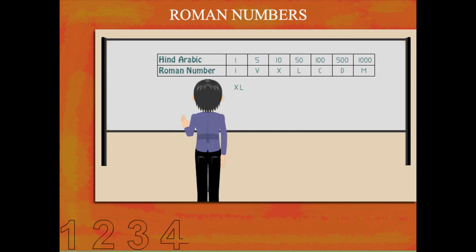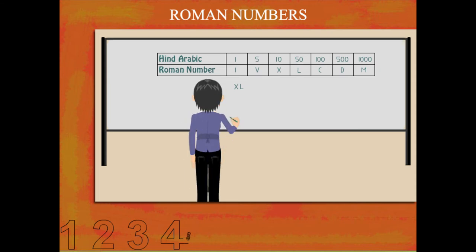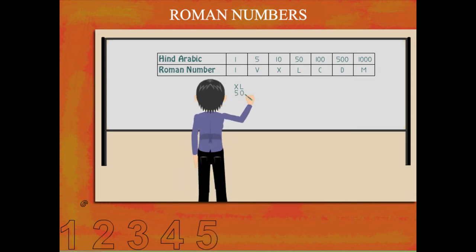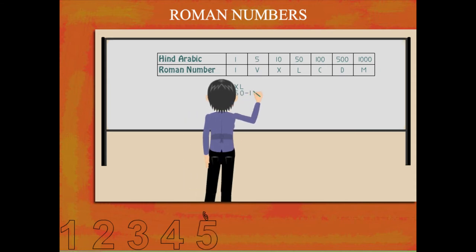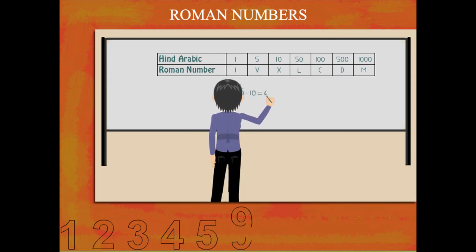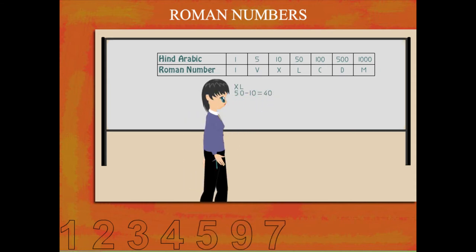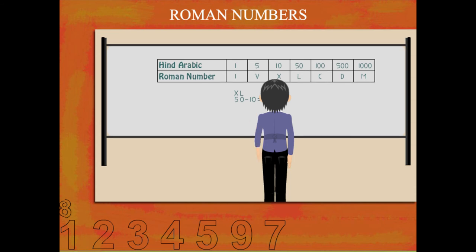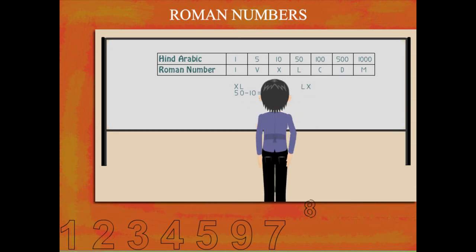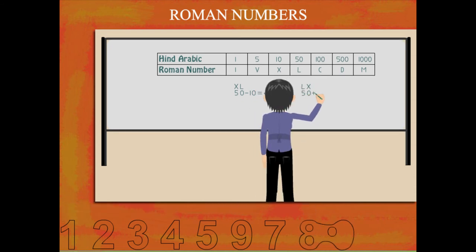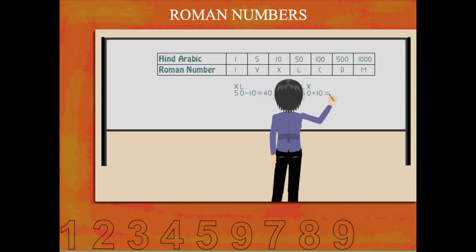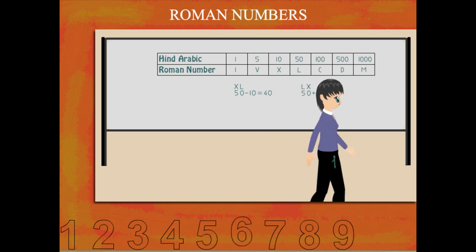She explains that XL is 50 minus 10, which equals 40. And what is LX? It is 50 plus 10, which equals 60.